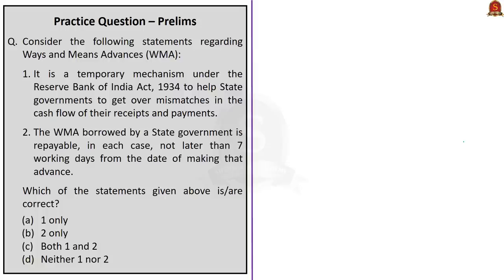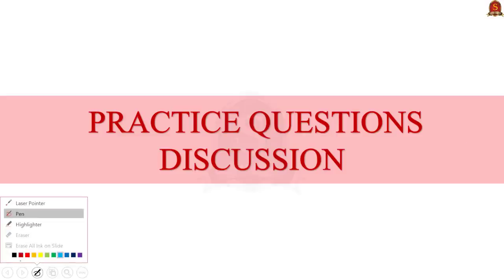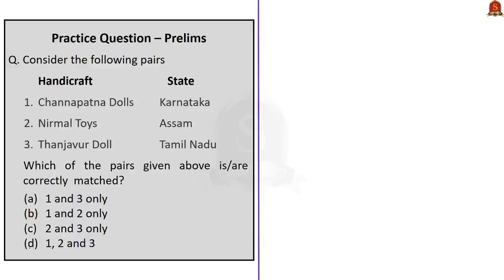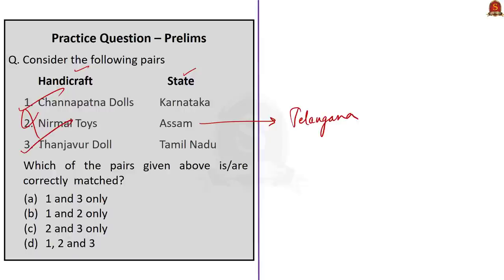We have come to the practice questions discussion session. The first question is pair-based on handicrafts and the states they belong to. The first pair is Channapatna dolls — Karnataka, which is correct. The second pair is Nirmal toys — Assam, which is incorrect because Nirmal toys and crafts are originally from Telangana, not Assam. The third pair is Thanjavur doll — Tamil Nadu, which is correct. The question asks for correctly matched pairs, so the correct answer is option A: one and three only. Remember that all these toys have GI tags.